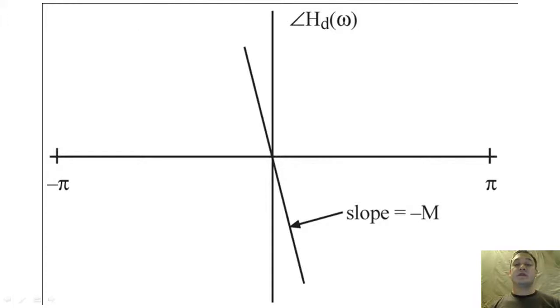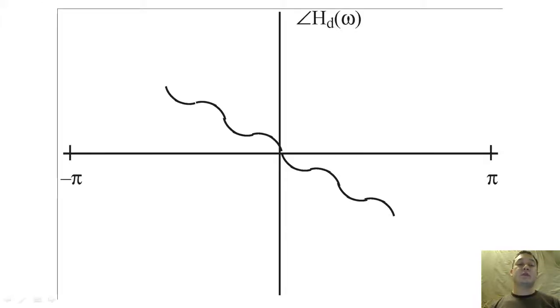If the phase of the filter is non-linear, then the output of this filter will not resemble the output of the ideal low-pass filter, because every cosine will be delayed by inconsistent amounts.